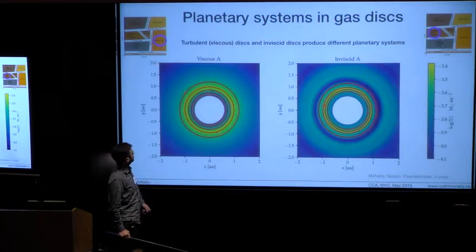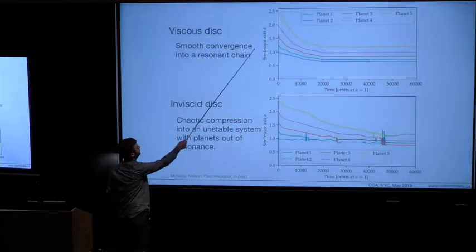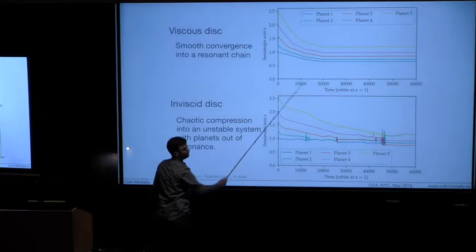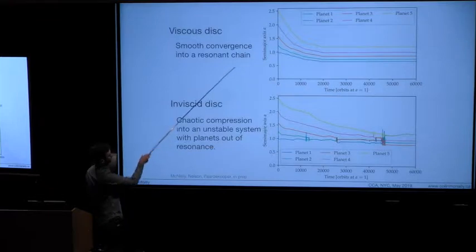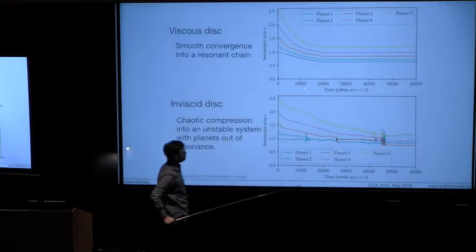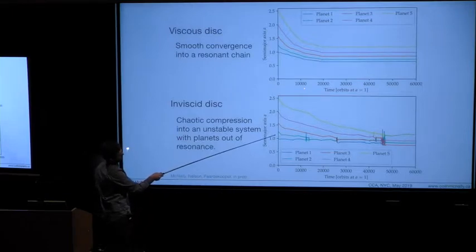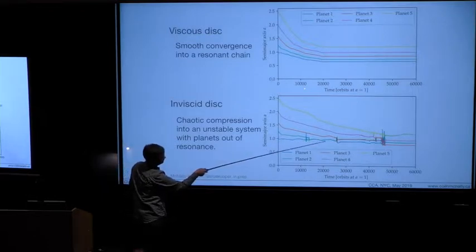I can show you that a little bit more clearly if I show you the semi-major axes of the planets versus time. In the viscous case they compress into this nice smooth resonant chain. In the inviscid case the extra perturbations allow the planets to have close encounters and it sequentially compresses into this much tighter configuration but sometimes with planets out of resonance.